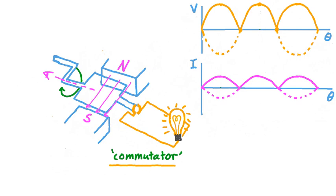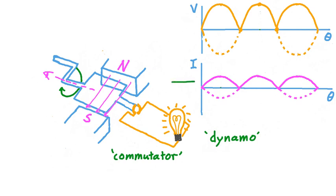The term generator is usually associated with AC — alternating current output. When we put a commutator in and convert the output to DC, direct current, the device is often called a dynamo. One way to remember that is that dynamo corresponds with DC, and generator corresponds with AC. When an AC signal is turned into a DC signal by the insertion of a commutator, we say that the signal has been rectified — meaning all the negative values have been flipped around the horizontal axis so they're now positive.